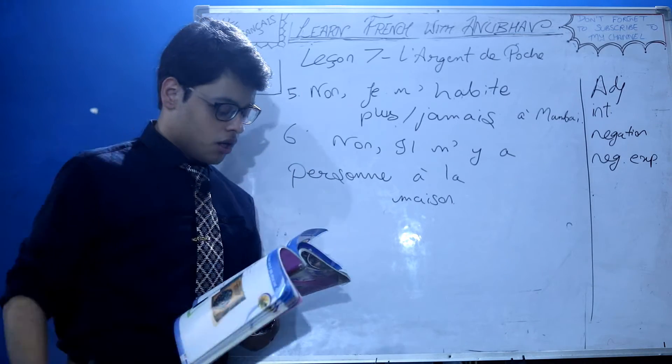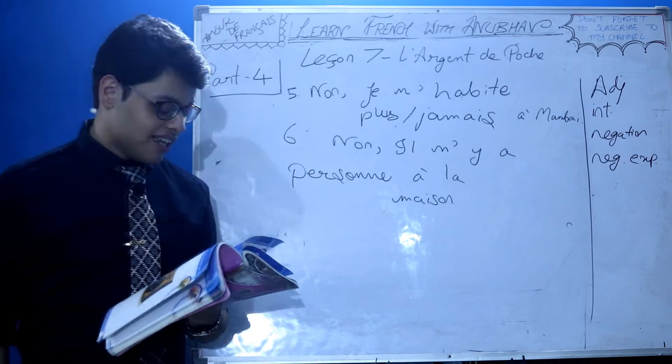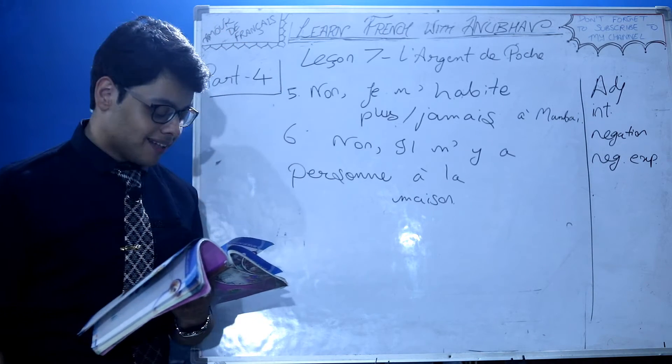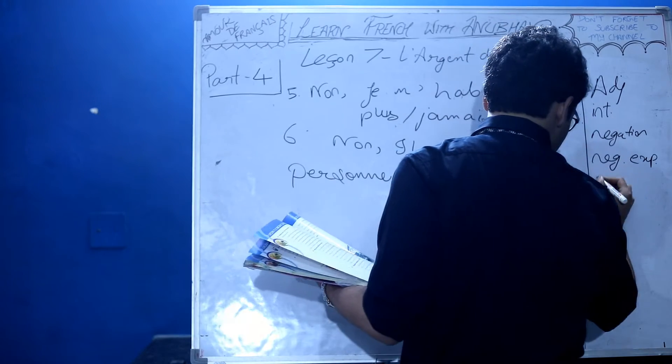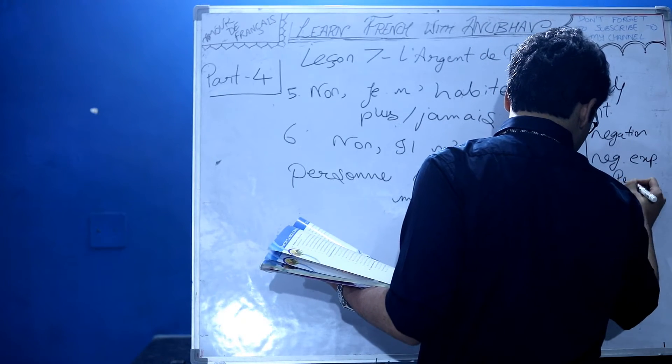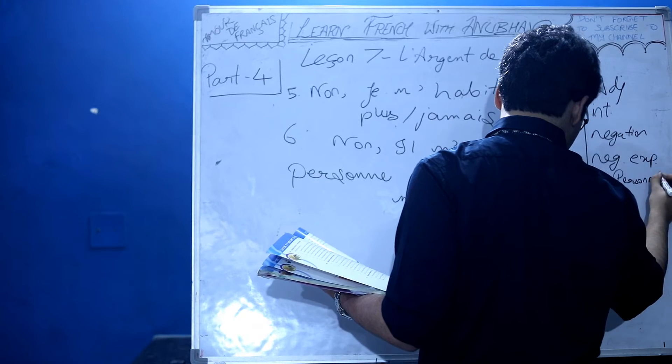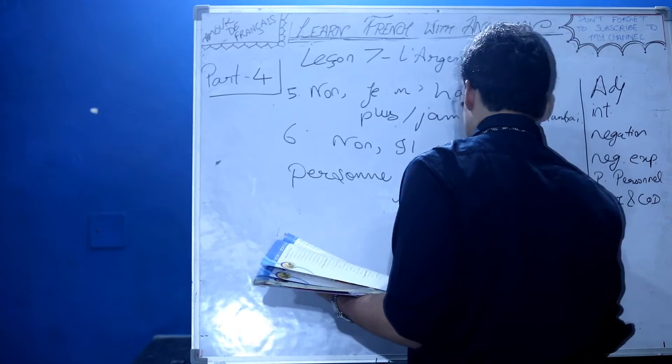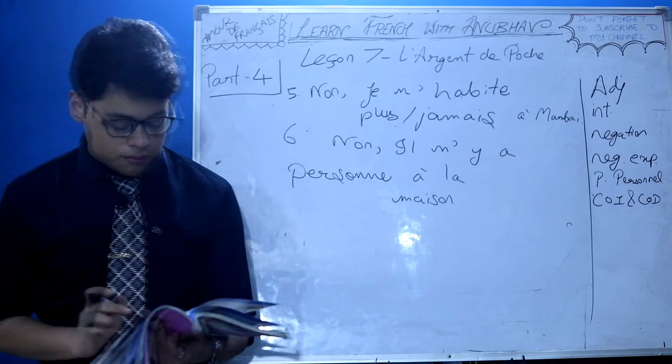Exercise B: Remplace par les pronoms personnels l'apostrophe, le, lui, and les. You may watch my pronoms personnels videos and COI and COD videos. This topic will be very clear to you.